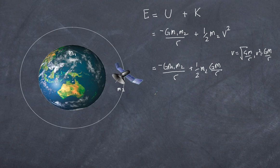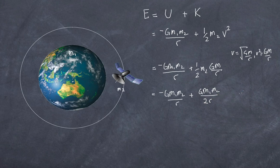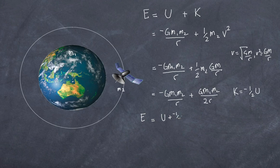Combining these, the total energy is negative Gm1m2 over r plus one-half times Gm1m2 over r. This simplifies to show that the kinetic energy equals negative one-half of the gravitational potential energy. So the total energy equals U plus negative one-half U, which gives negative Gm1m2 over 2r.